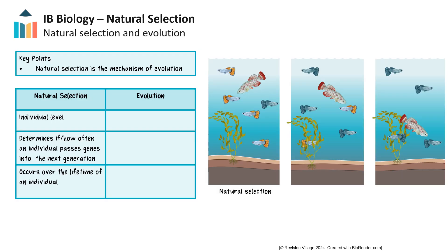Natural selection is the mechanism of evolution. At first glance, natural selection seems like quite a simple concept, but we'll see that when it plays out in the natural world, it has layers of complexity that this video merely touches on. Natural selection can sometimes be confused with evolution. However, we can see that there are different processes here, and it's useful to compare them.